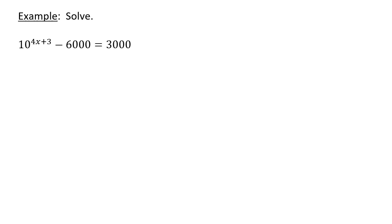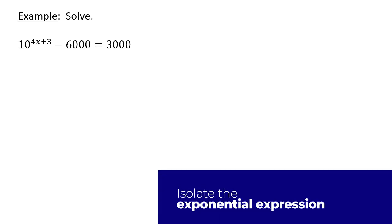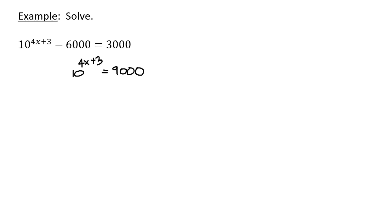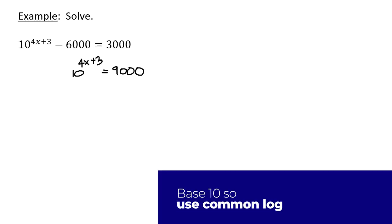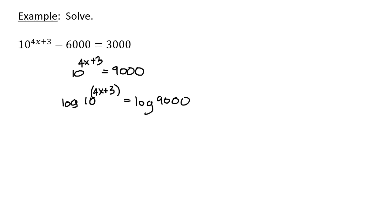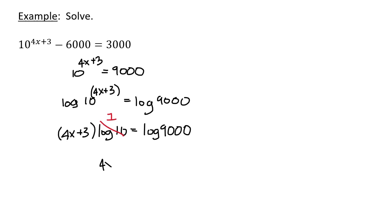Next, solve 10 to the power of 4x plus 3 minus 6,000 equals 3,000. I want to isolate the exponential expression, so I add 6,000 to both sides and get 10 to the power 4x plus 3 equals 9,000. Because the base is 10, it makes the most sense to take the common logarithm of both sides. Using the power property gives me 4x plus 3 multiplied by log 10, and log 10 is just 1.